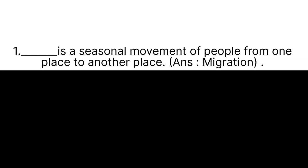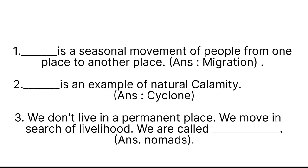Fill in the blanks. Dash is a seasonal movement of people from one place to another place. Answer is Migration. The next one: Dash is an example of natural calamities. Answer: Cyclone. We can also write floods, earthquakes, and tsunami in place of cyclone.